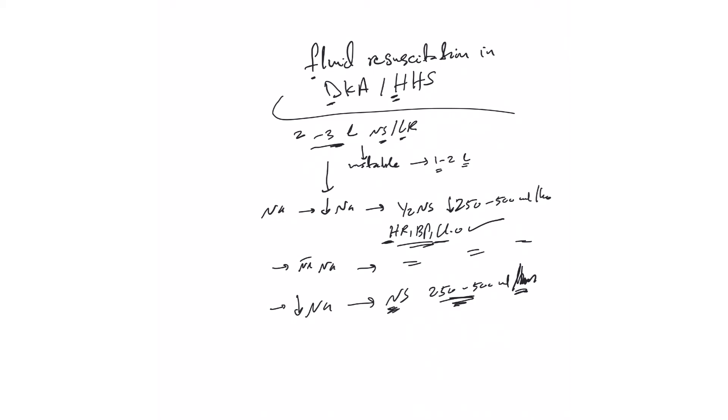In all of these cases, if the blood sugar drops equal to or less than 250 (some say 200, some say 300), add D5W to whatever solution you are using, because these patients are on insulin drip and we need to avoid hypoglycemia.